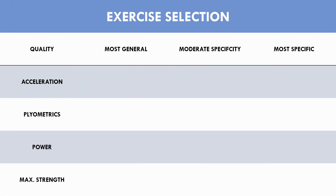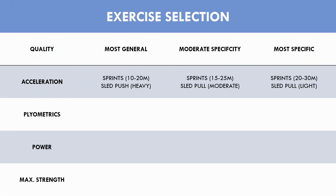Starting with acceleration ability, we will use an unloaded sprint method and a resisted sprint method. For the unloaded sprints we have three different distance ranges: shorter distances of 10 to 20 meters for the most general mesocycle, 15 to 25 meters for a more specific mesocycle, and longer distances of 20 to 30 meters where the athlete can reach greater speeds in the most specific mesocycle.